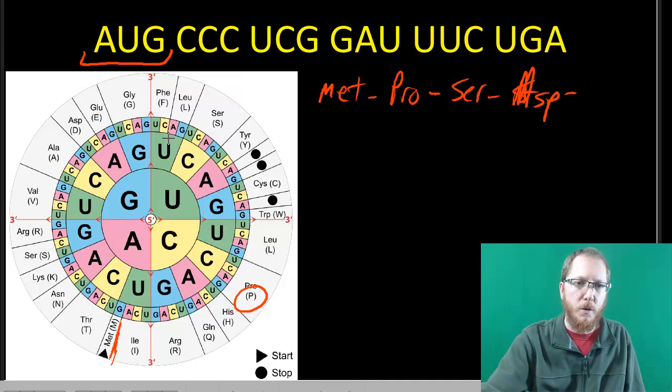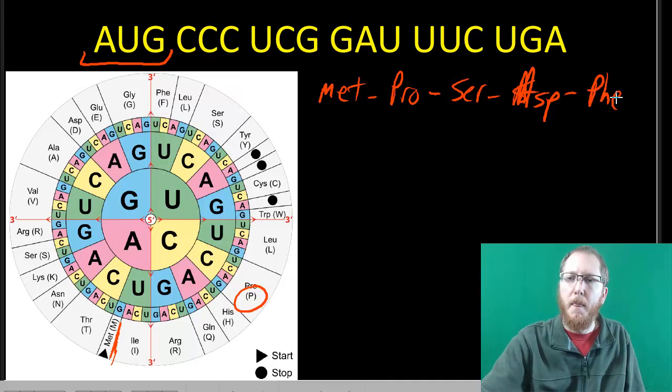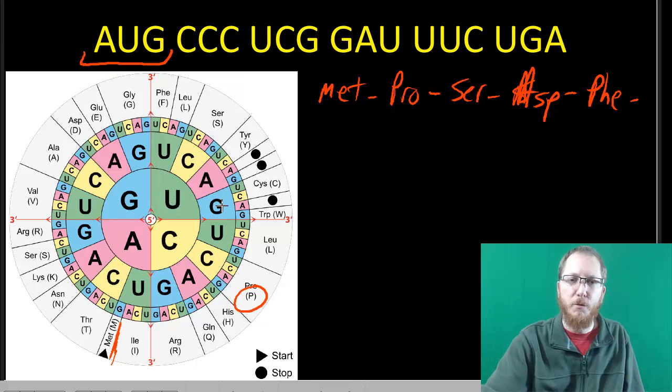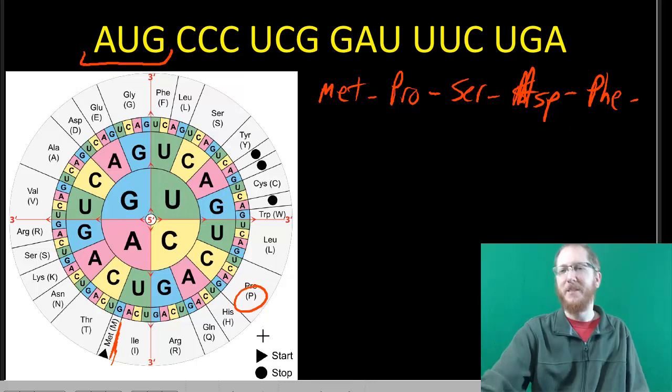U, U, C. I think that's phenylalanine, PHE. And then lastly, we have U, G, A. I know I don't really have room to write another one, but that's okay because U, G, A is a stop codon, so it just says you're done.